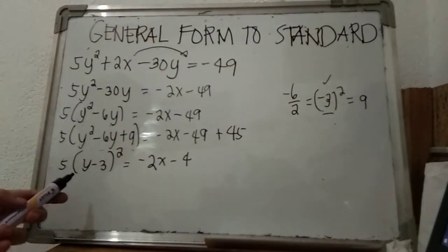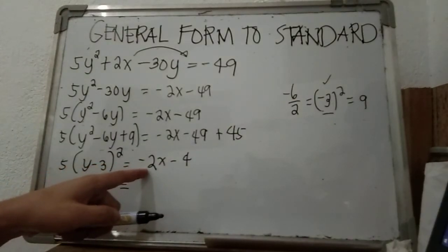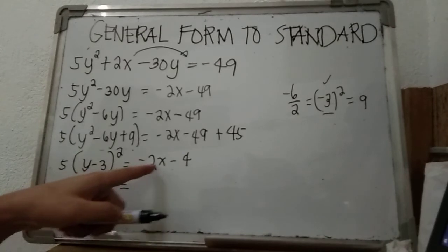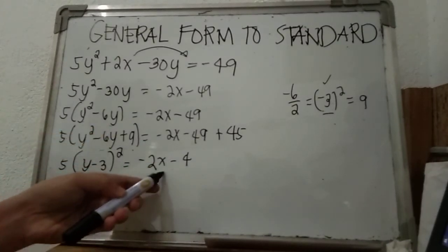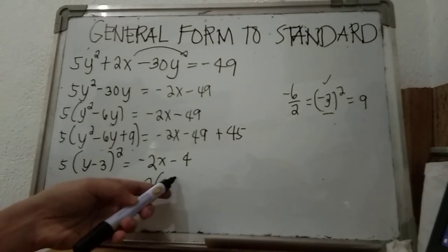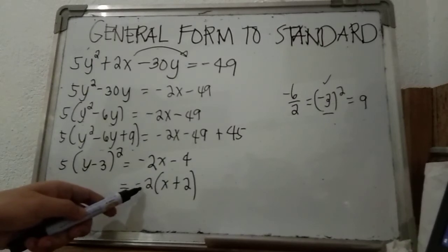From here we will be factoring out the common. What's the common of negative 2 and negative 4? Negative 2. So factor that out: negative 2 times (x plus 2).